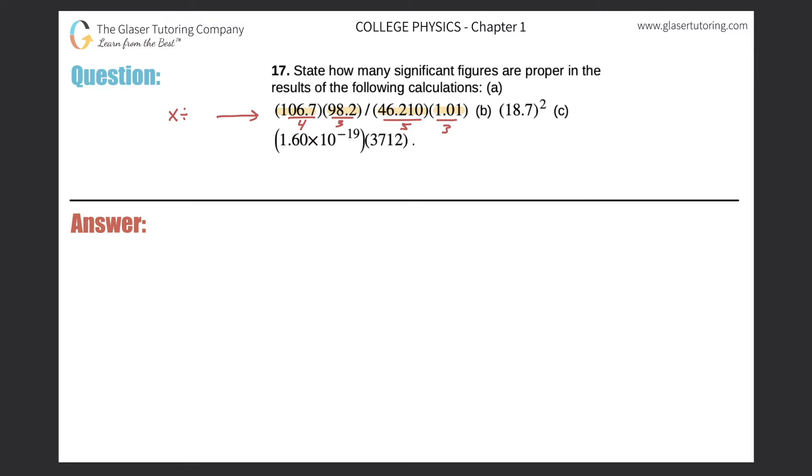Now, if calculating significant figures is an issue, we do have a prior video that I'll either tag or put in the description below. But in order to answer this question now, all we need to do is highlight what's the least number of significant figures. So it looks like the least number would be three. And I'll just box this answer right here.